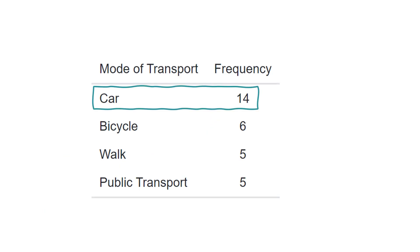For example, if 14 people travel to work by car, 6 by bike, 5 walk and 5 take public transport, then car occurs most often and is therefore the mode.